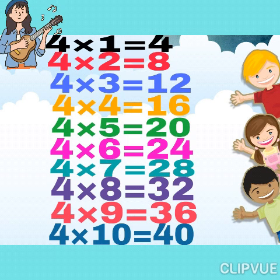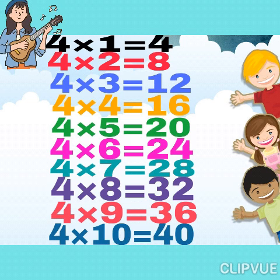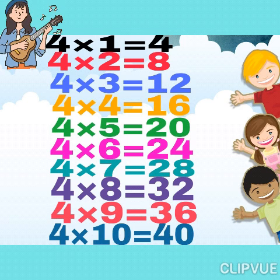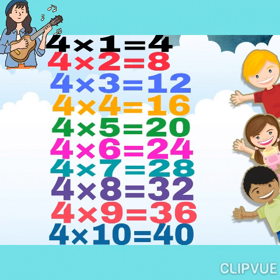Let's sing with me. Four ones are four. Four twos are eight. Four threes are twelve. Four fours are sixteen. Four fives are twenty.